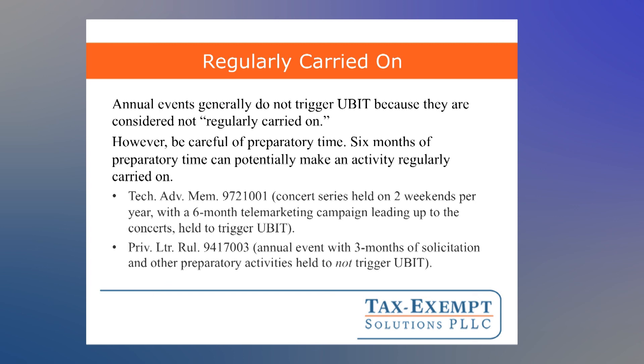You also want to think about whether the annual event is geared towards something that furthers your exempt purpose — for instance, if there are a lot of educational activities that are part of your annual conference, that may be another reason to escape UBIT. So that is the three-part basic UBIT test: an activity must be unrelated, a trade or business, and regularly carried on. In another webinar, we'll look at some of the special rules that modify the basic test.